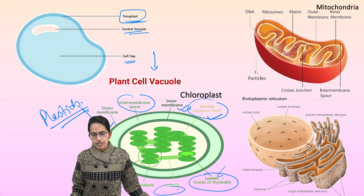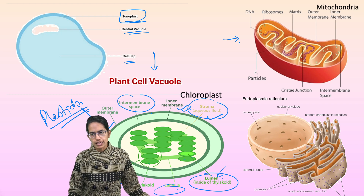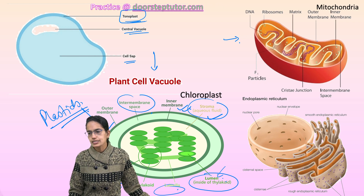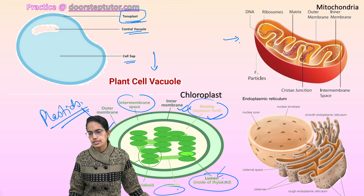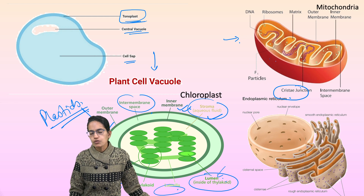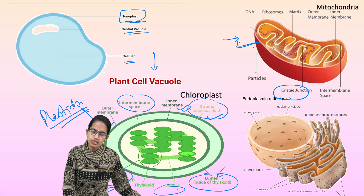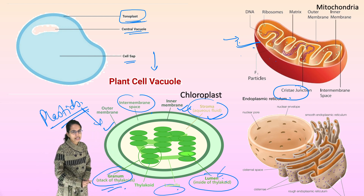The next is mitochondria, known as the powerhouse of the cell. Mitochondria again has an outer membrane and an inner membrane. The outer membrane is smooth. The inner membrane has folds known as cristae, and the point where they unite is known as the cristae junction. Oxidation of food to produce ATP is seen in the mitochondria, and therefore it is called the powerhouse of the cell — it is responsible for providing energy to the cell.